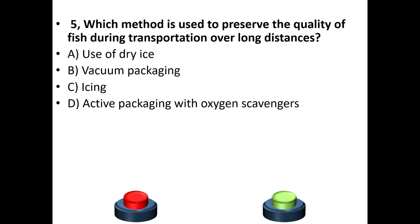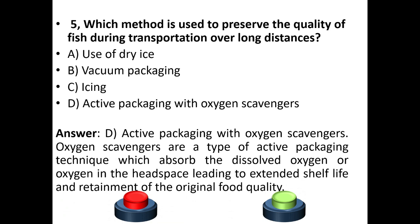Fifth question: Which method is used to preserve the quality of fish during transportation over long distances? Options: use of dry ice, vacuum packaging, icing, active packaging with oxygen scavengers. The answer is option D — active packaging with oxygen scavengers. Oxygen scavengers absorb oxygen in the headspace, leading to extended shelf life and retention of original food quality.